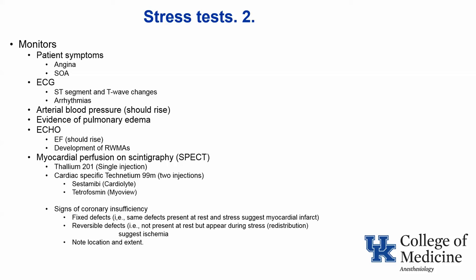Another method of assessing effects of ischemia is myocardial perfusion scanning. Two agents are used: thallium or cardio-specific technetium, carried by either sestamibi or tetrofosmin. The sign of coronary insufficiency is the development of unequal distribution of the isotope during stress. If an area of the heart has decreased flow both at rest and with exercise, it suggests a fixed defect due to myocardial infarction. If unequal distribution develops only during exercise, it suggests a reversible defect due to ischemia. If defects are present, you should note the location and extent of the defect.